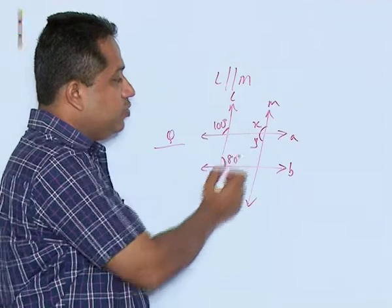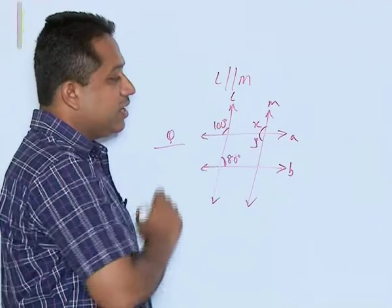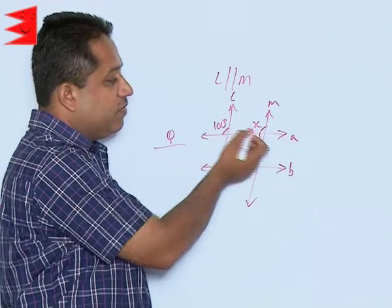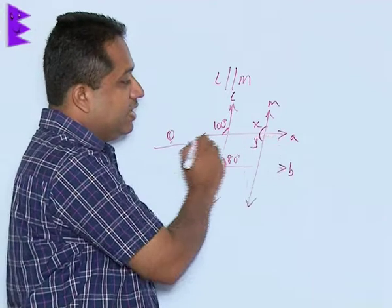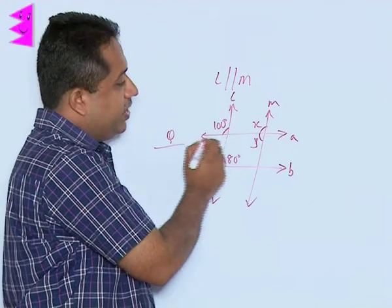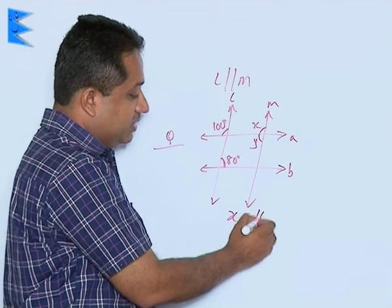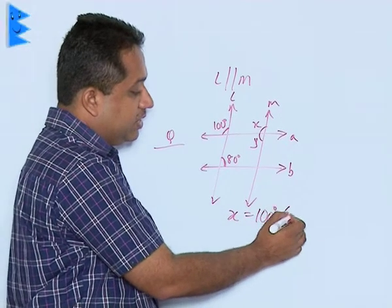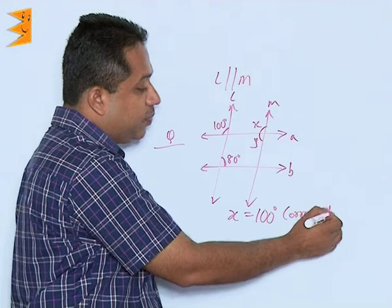Now, if these two lines are parallel, then we can use the property of corresponding angles to find out the value of x. L and M are parallel lines, so we can say that A is a transversal. If A is a transversal, then we can say that x is equal to 100 degrees, using the property of corresponding angles.